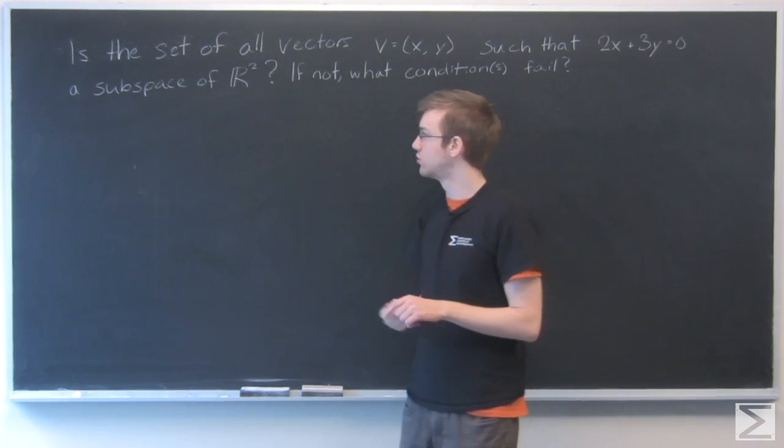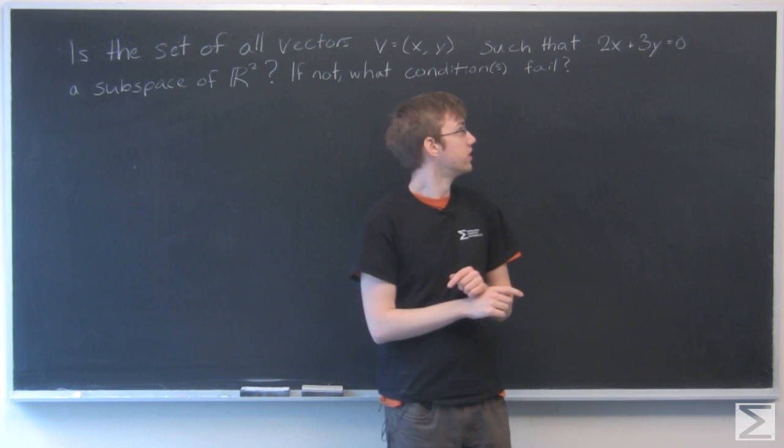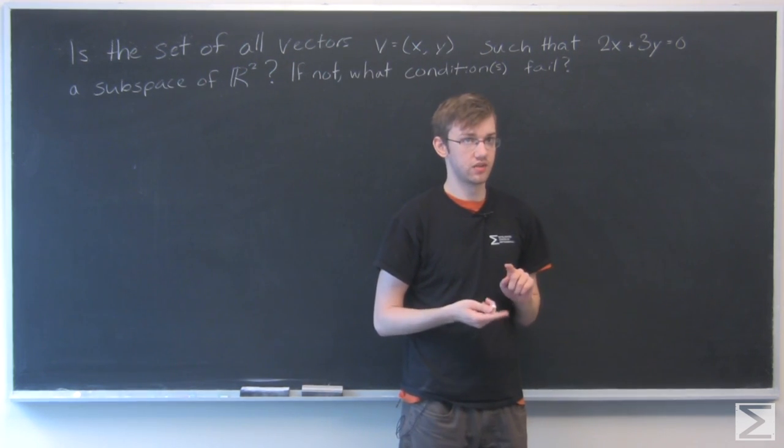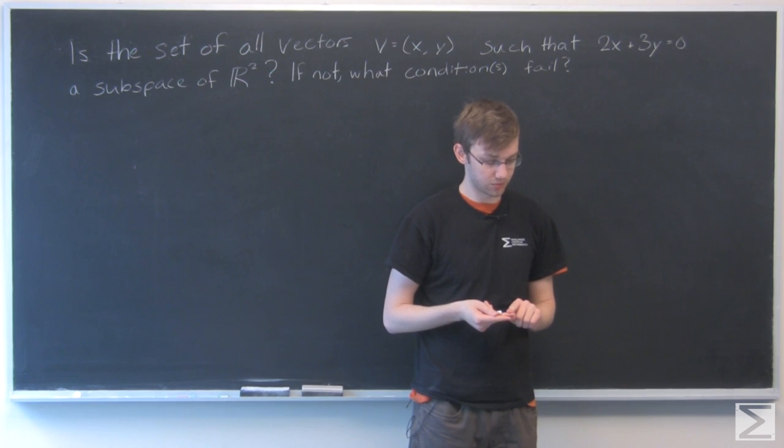The three conditions to be a subspace are that it contains the zero vector and is closed under addition and scalar multiplication.